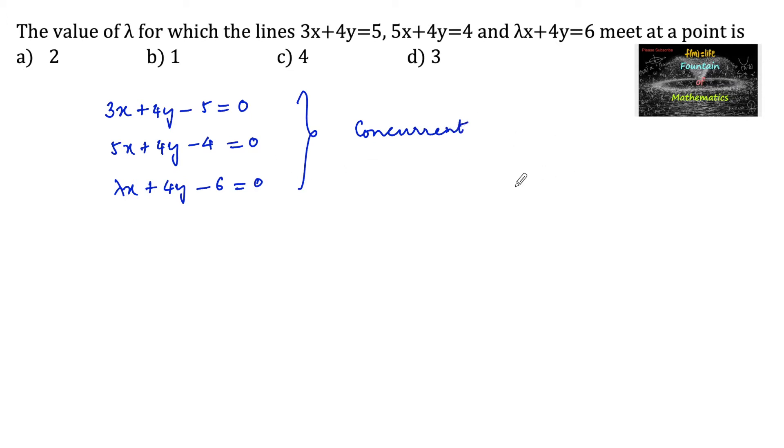Concurrent means all the three given lines are passing through the same common point. So by solving any two line equations, the third line must pass through that common point. Let us solve equations 1 and 2.